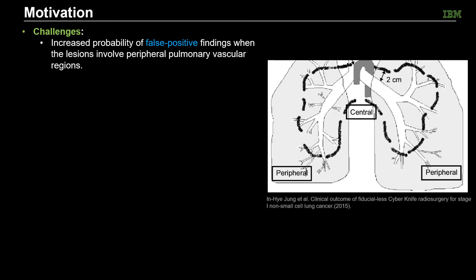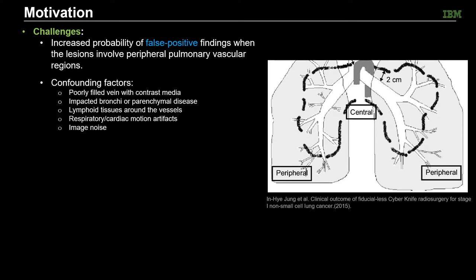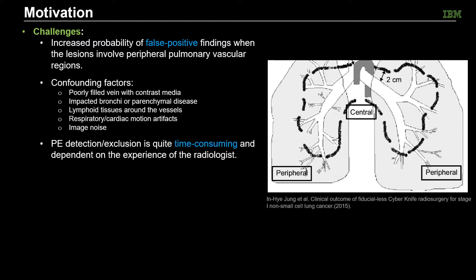There are also confounding factors, including poorly-filled contrast, other pulmonary diseases, lymphoid tissues, image artifacts, and image noise that could all lead to false positive findings. In addition, PE detection is quite time-consuming and dependent on the experience of radiologists.